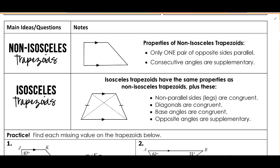In this video, we're going to talk about properties of trapezoids and isosceles trapezoids. It's really important that you know the different properties of our special quadrilaterals. So if you need to make note cards, or if you want to make your own Quizlet or find one online, there are plenty of those so you can start learning those special quadrilateral properties.